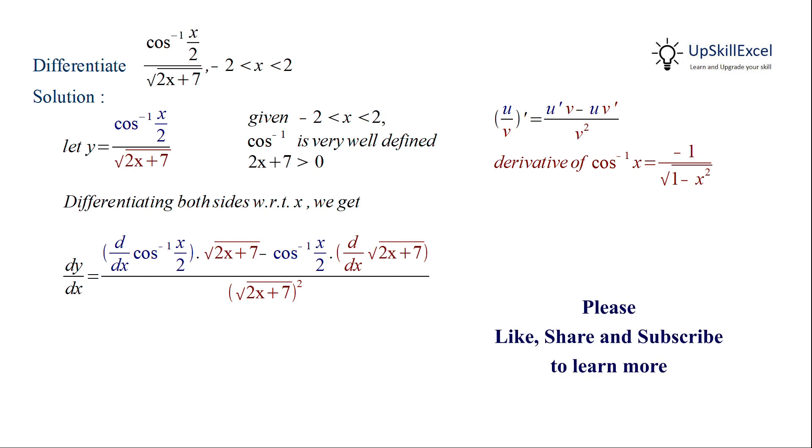Similarly, for under root of 2x plus 7, also we can apply the chain rule formula and differentiate.